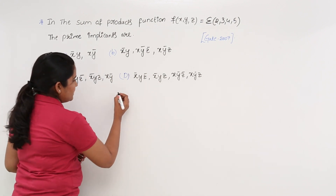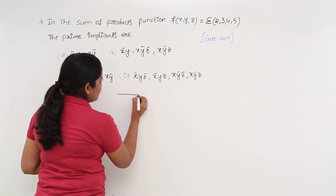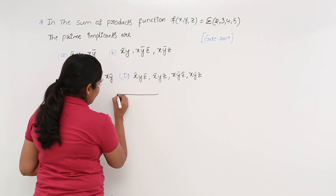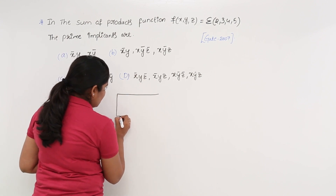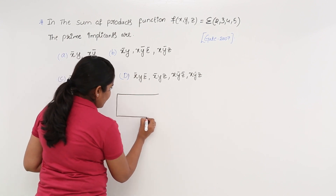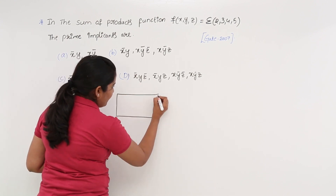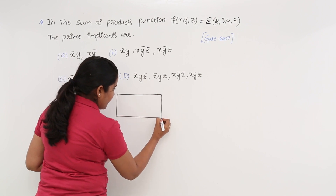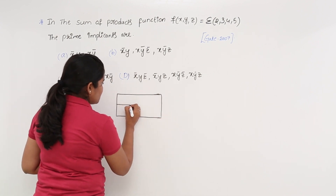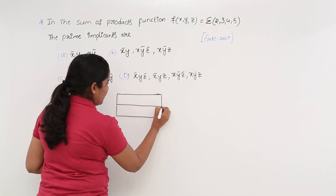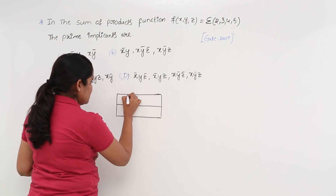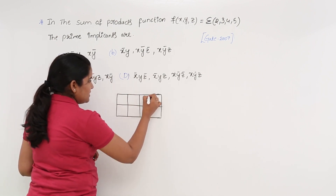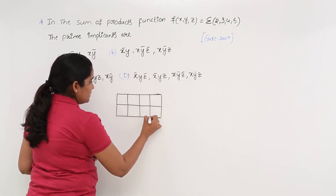Now I am considering a 3-variable K map here. This is a 3-variable K map, which shows like a rectangle and definitely contains 8 cells. Here there is a separation — I am taking X on one axis and YZ on the other.